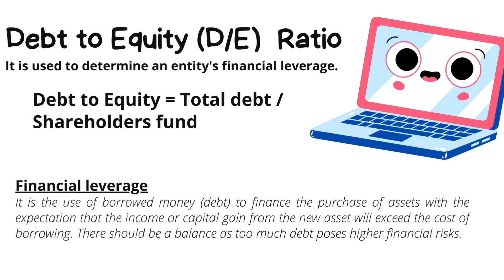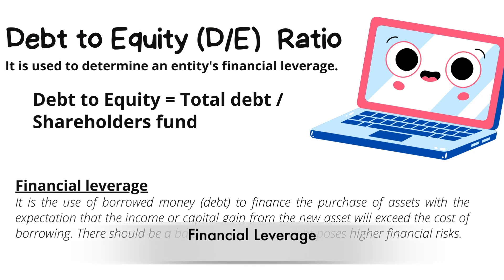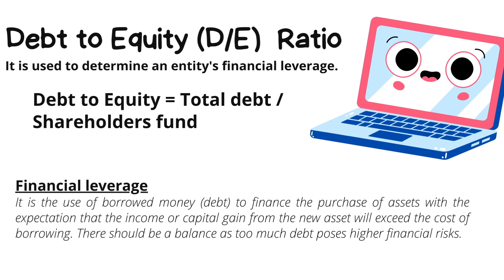Debt-to-equity ratio is used to determine the company's financial leverage. Financial leverage means the use of borrowed money, which is the debt, to finance the purchase of assets with the expectation that the income or capital gain generated from the new asset will exceed the cost of borrowing and there will be net profit. The ratio varies by industry; however, there should be a balance, as a very high debt-to-equity ratio indicates a lot of debt that will pose higher financial risk, while a low ratio is also not good because it doesn't offer financial leverage, thus limiting profitability.